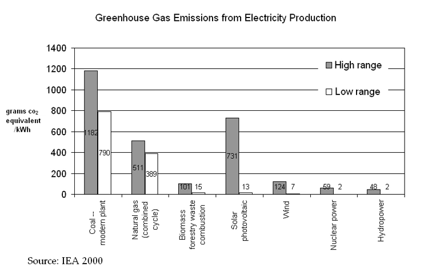Efficient energy use, sometimes simply called energy efficiency, is the goal of efforts to reduce the amount of energy required to provide products and services. For example, insulating a home allows a building to use less heating and cooling energy to achieve and maintain a comfortable temperature. Installing LED lighting, fluorescent lighting, or natural skylight windows reduces the amount of energy required to attain the same level of illumination compared to using traditional incandescent light bulbs.